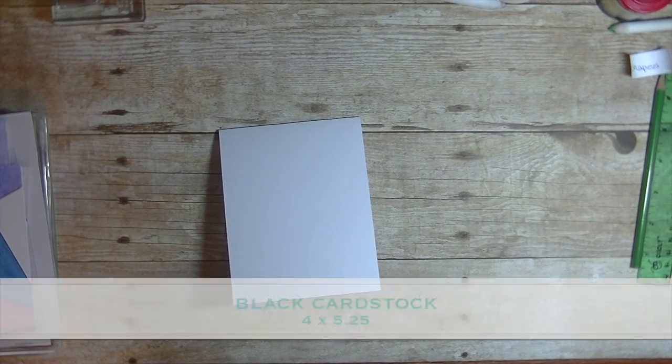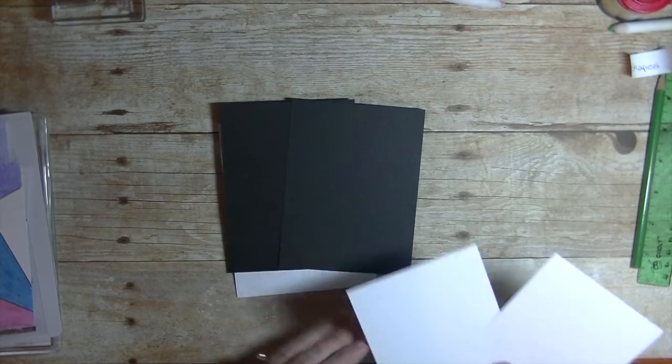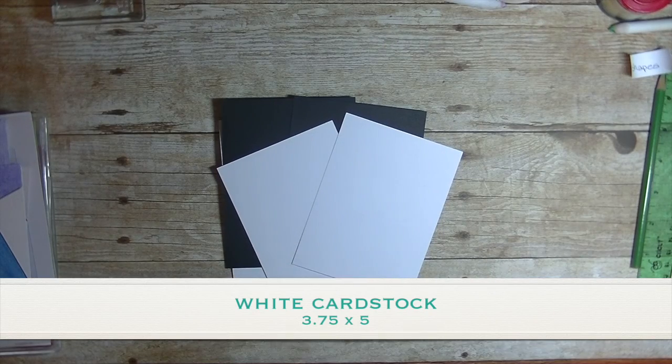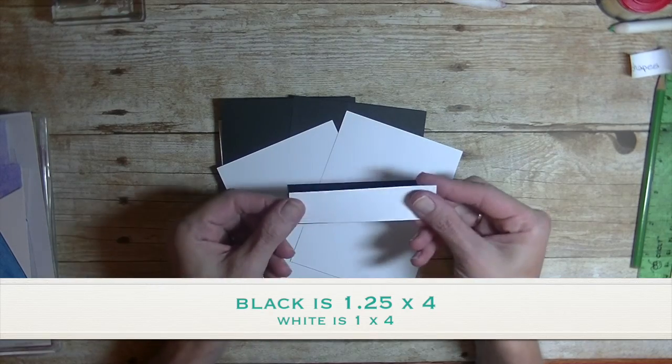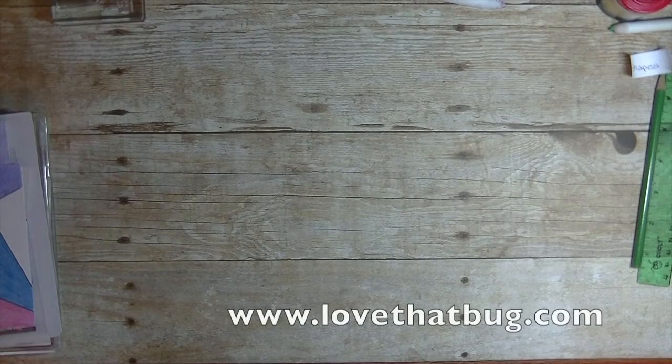Then we have two pieces of black cardstock. They both measure four by five and a quarter. Two pieces of white cardstock. They are three and three quarter by five. Then we have another piece of black. This is one and a quarter by four. A piece of white that is one inch by four. More about all these sizes on my blog.